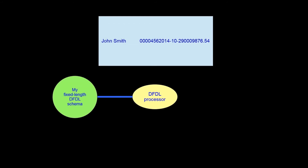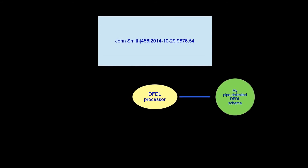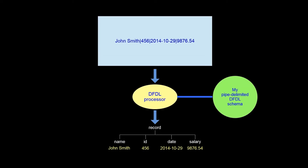When we use a DFDL processor to parse our fixed length data with our fixed length DFDL schema, the parsed data is exactly the same as the data that we get when we use a DFDL processor to parse our pipe delimited data with our pipe delimited DFDL schema. This is because in both cases the data is logically the same — it is just presented in different physical formats. When we remove the delimiters and the padding, we are left with the same data. This distinction between physical data and logical data is very important as we will discover in future videos in this series.